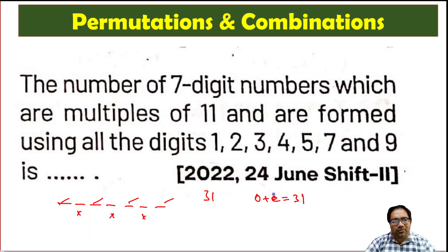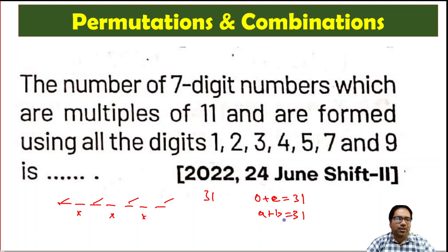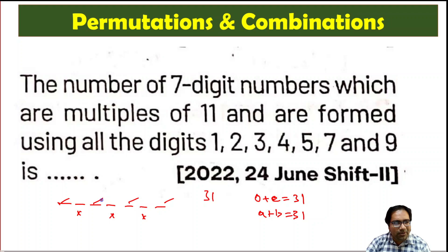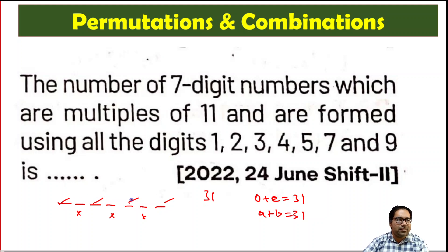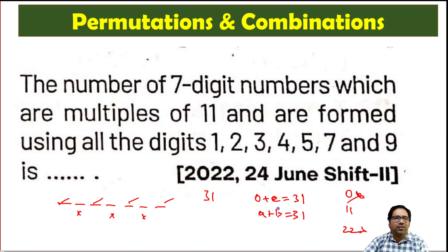Since odd plus even sums equal 31 (an odd number), one of the sums must be odd and the other even. For divisibility by 11, the difference of the sum of odd-position digits and the sum of even-position digits must be a multiple of 11 — it can be 0, 11, or 22. But because one sum is odd and the other is even, their difference cannot be even, so 0 and 22 are ruled out. Therefore the difference must equal 11.